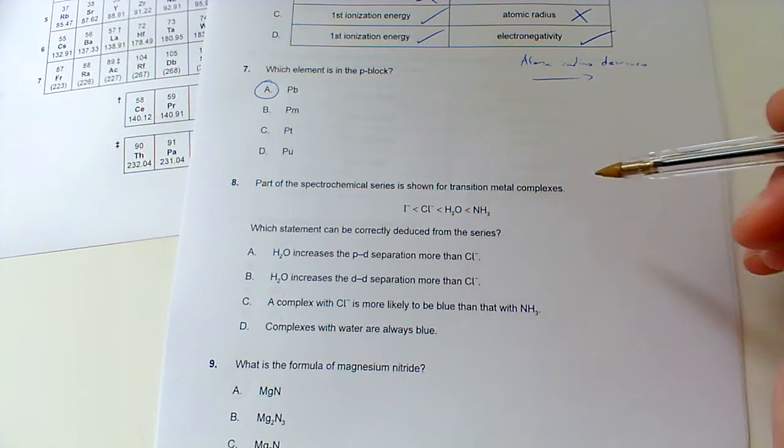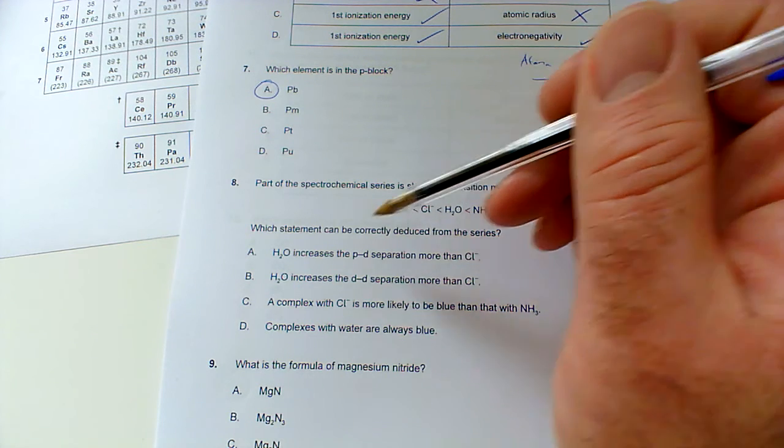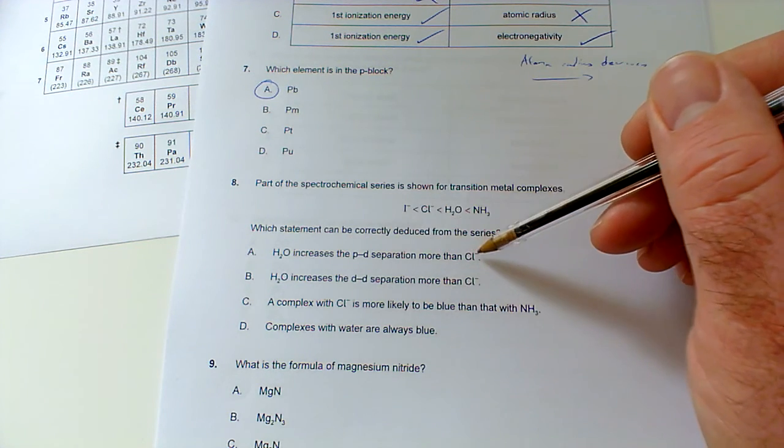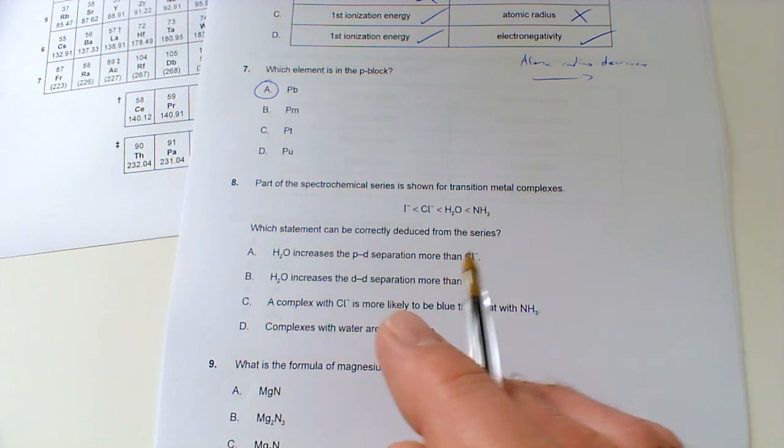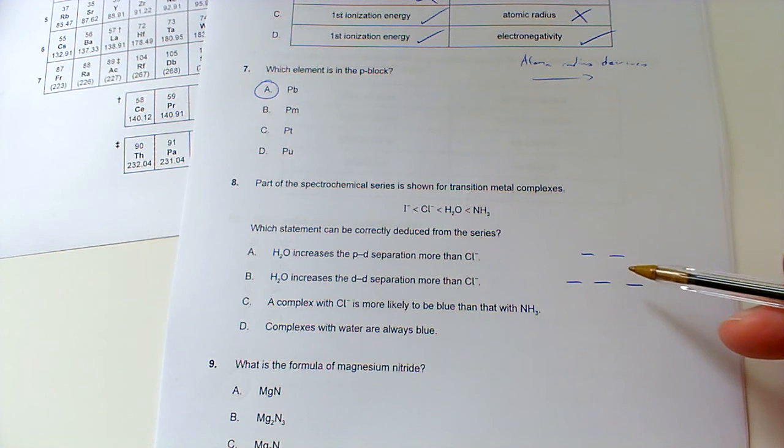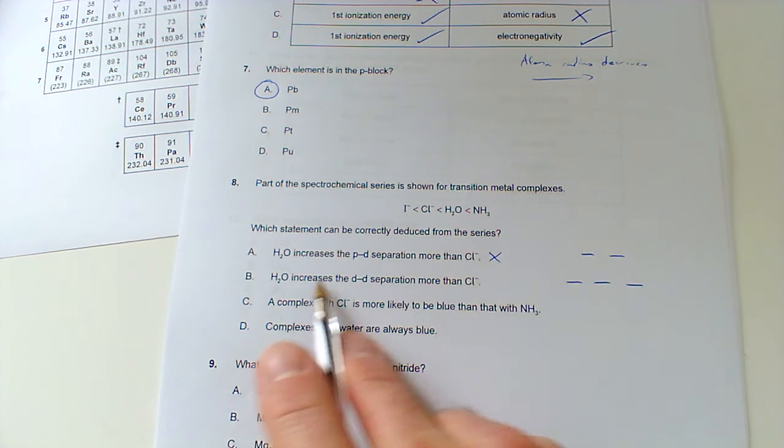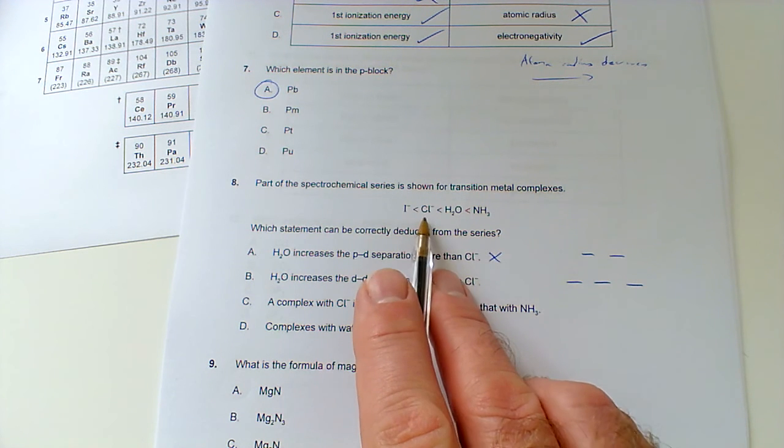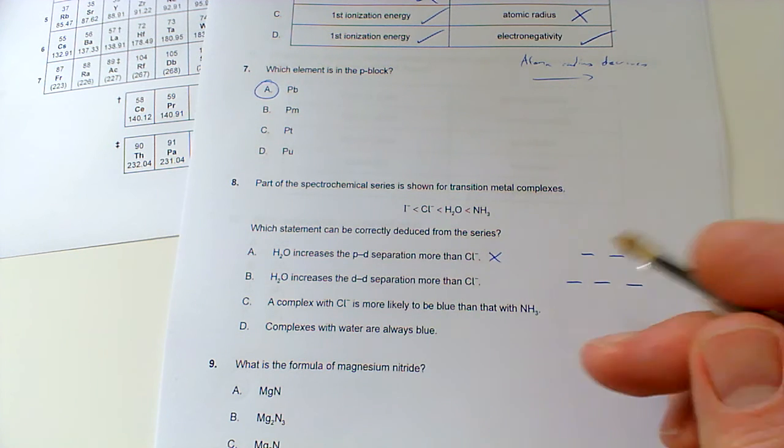Number eight: part of the spectrochemical series is shown for transition metal complexes. So we've got ammonia is higher than water, higher than chloride, higher than iodide. Water increases the P-D separation more than chloride, but we're not talking about separating the P and D sublevel. We're talking about, remember, the difference between the split D sublevel. So this is the five orbitals of the D sublevel, and the size of the splitting is affected by the ligands as one factor. So it's not the P-D, it's the D-D separation. And yeah, water is higher on the spectrochemical series than chloride. So therefore will the higher it is in the spectrochemical series the greater the splitting? So that is correct.